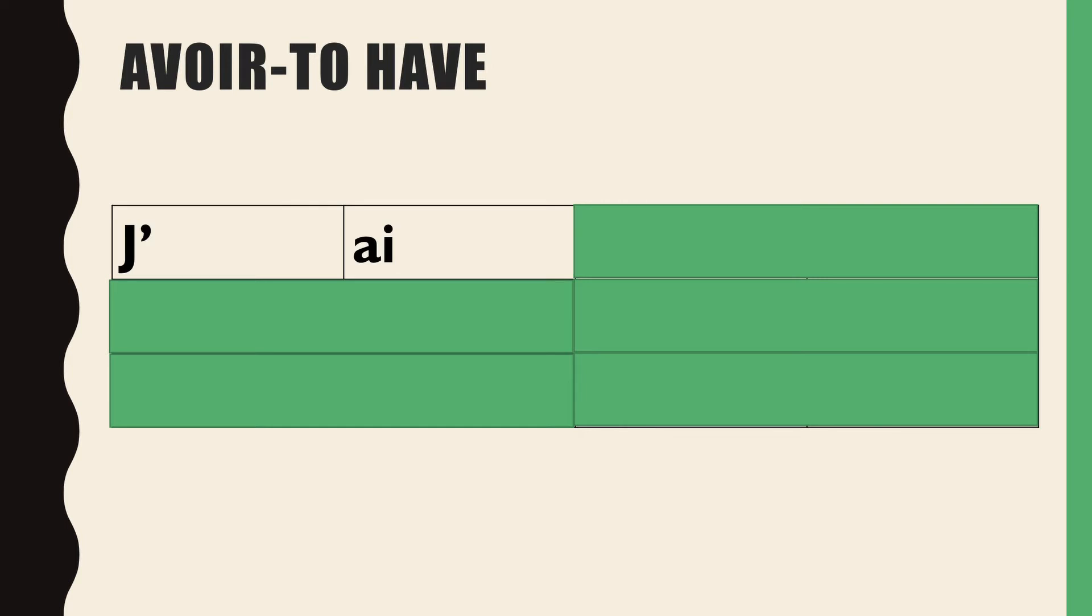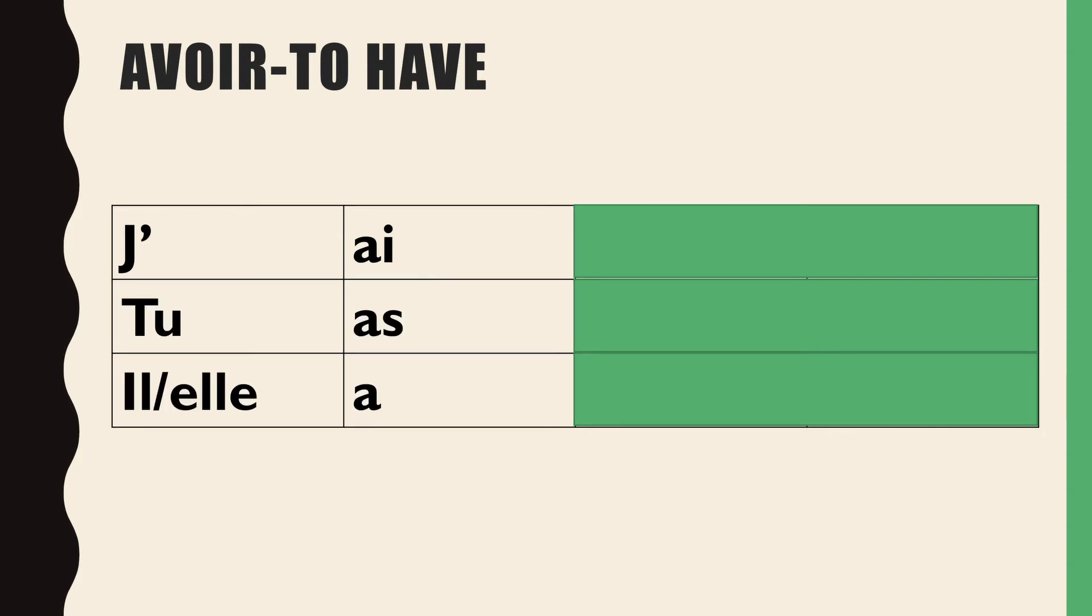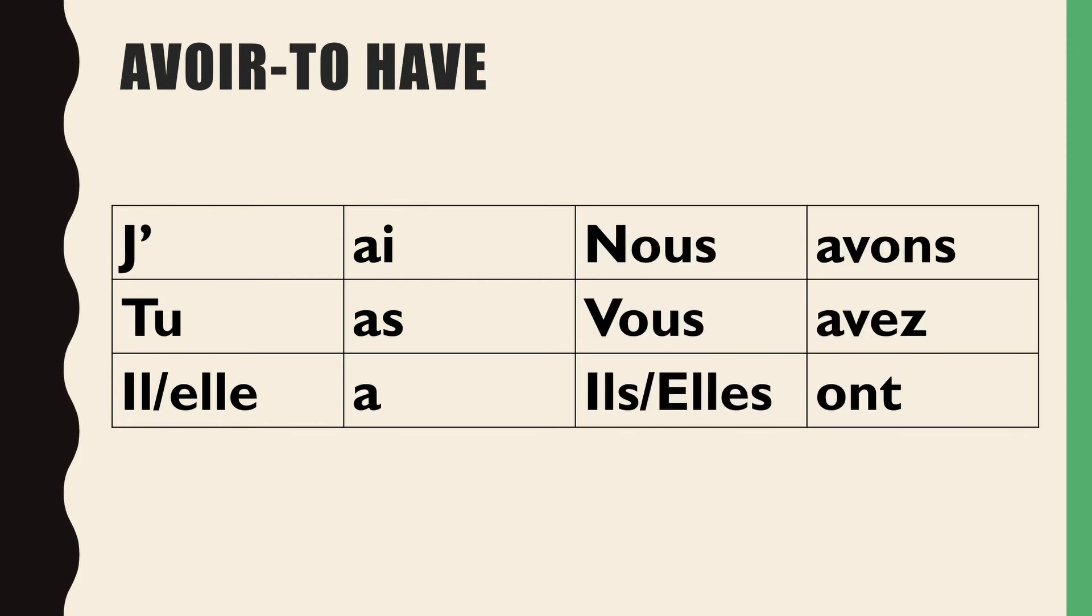So we're going to start with je form, obviously, but because there is that vowel in A, it becomes j'ai. And you have tu as, il a, elle a, nous avons, vous avez, ils ont, elles ont.